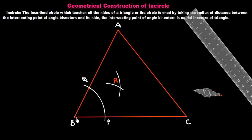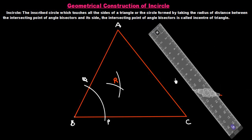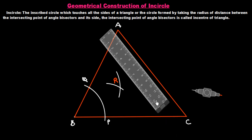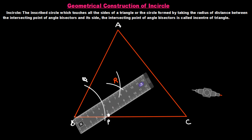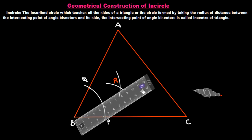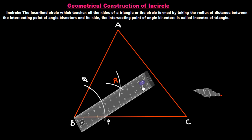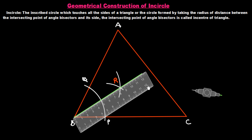Now we draw a line passing through B and R with the help of the ruler. This line we have drawn — BR is the angle bisector of angle B.